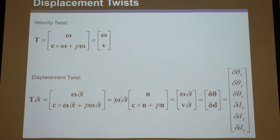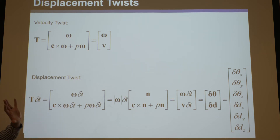If you take the derivative of a twist with respect to time, you get acceleration twists — angular acceleration α and linear translational acceleration a. So we've covered displacements, velocities, and accelerations all packaged in what's called twist land. By the way, these six-by-one vectors are called Plücker vectors — the way they're organized is a Plücker vector, and that's how screw theory organizes the information about rotations and translations together.